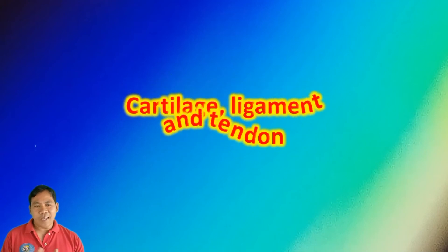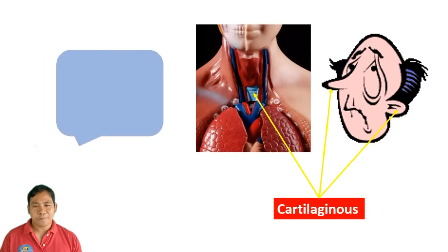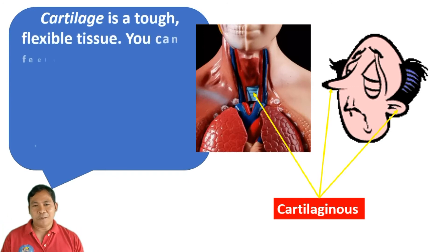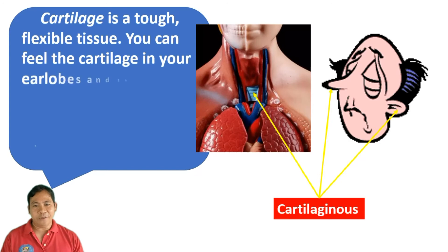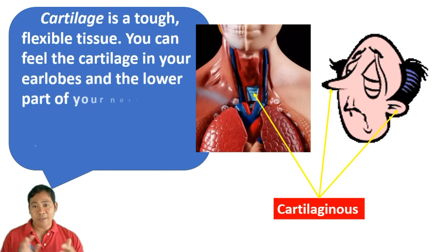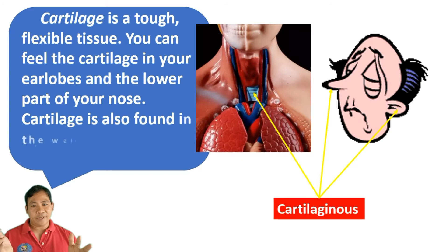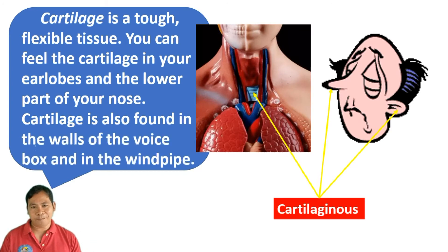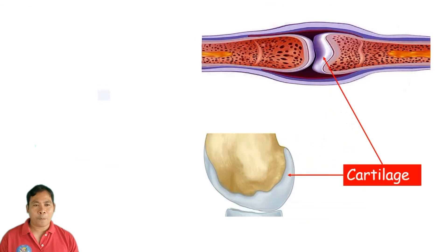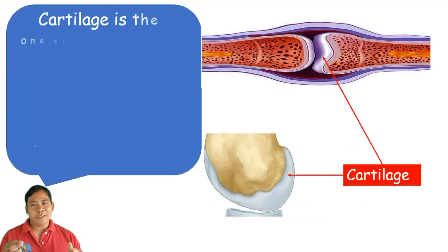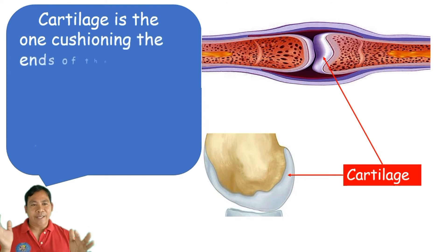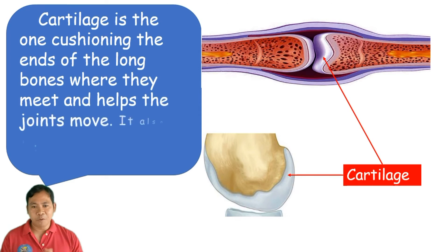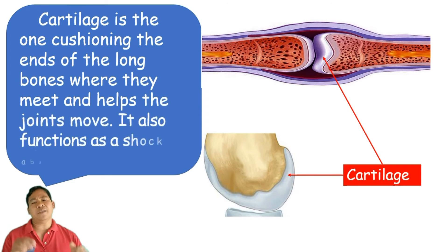Cartilage, ligament, and tendon. Cartilage is a tough, flexible tissue. You can feel cartilage in your earlobes and the lower part of your nose. Cartilage is also found in the walls of the voice box and the windpipe. Cartilage cushions the ends of long bones where they meet and helps them move. It also functions as a shock absorber.